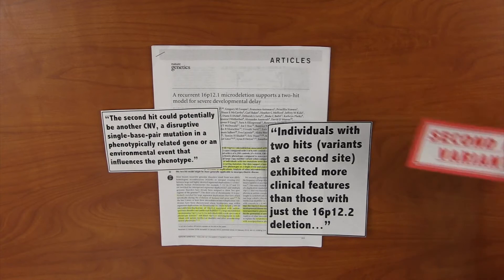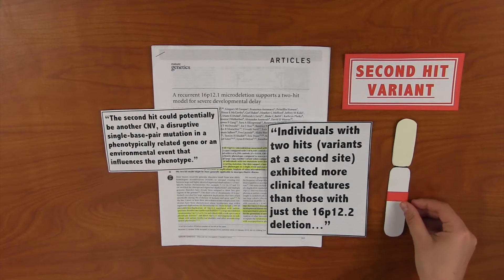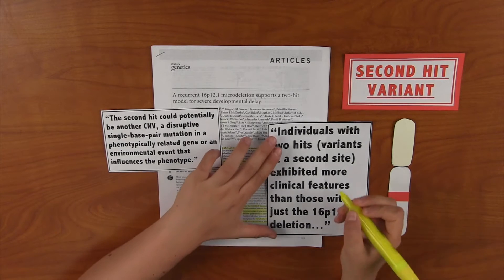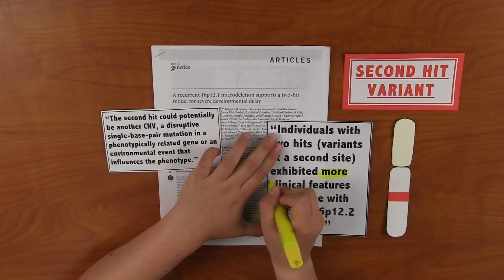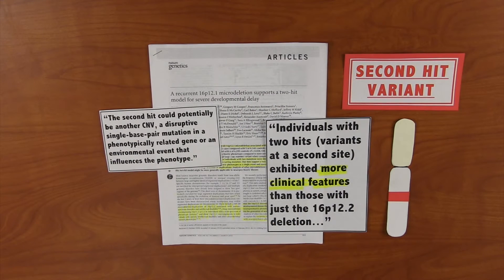These areas are called second hits and are likely responsible for the variety of the observed phenotypes we see in some of the 16P12.2 patients. These secondary hits are probably on a different chromosome but still somehow involved in the neurodevelopmental and disease pathways. We observed that those with multiple variants detected by sequencing and analysis had deficits in more domains and exhibited more clinical features than those with just a single variant.